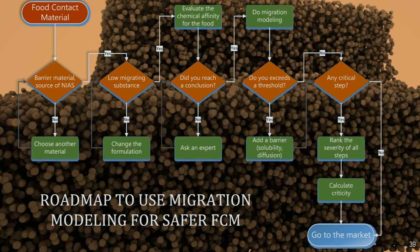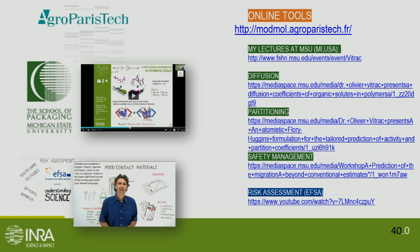I don't have time to present it fully, but here is a decision tree for when you want to design a new food contact material — the right decisions to take before going to market. If you are interested in more on modeling, when I was visiting professor at the School of Packaging at Michigan State University I made several lectures that are available online. I also encourage you to look at the presentation of Eric Barthélemy, my colleague at EFSA — it's really a good one.